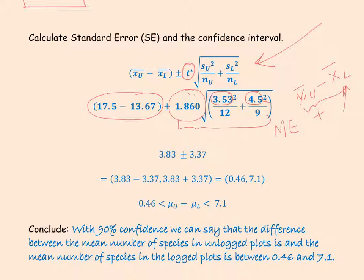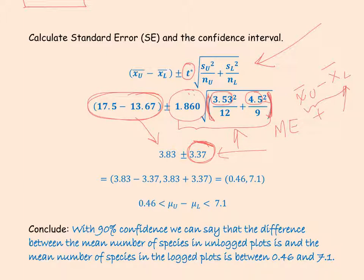Make sure to use parentheses — open and close them properly. If you enter all your numbers together and hit Enter just once, you get 3.37 for the margin of error. Try not to do it in separate parts, because rounding at each step can make the result slightly off. Then calculate the difference in the means of the two samples separately, and you have: difference in means plus or minus the margin of error.